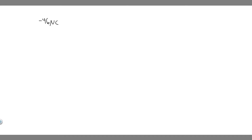In this problem, we're told a person scuffing her feet on a wool rug on a dry day accumulates a net charge of minus 46 microcoulombs. How many excess electrons does she get and by how much does her mass increase? So we're told she's going to get a charge of minus 46 microcoulombs, and we're trying to find the number of excess electrons and her mass increase — two different things.